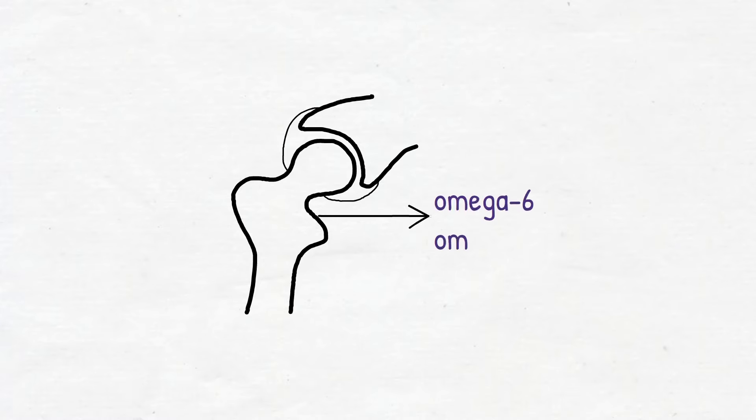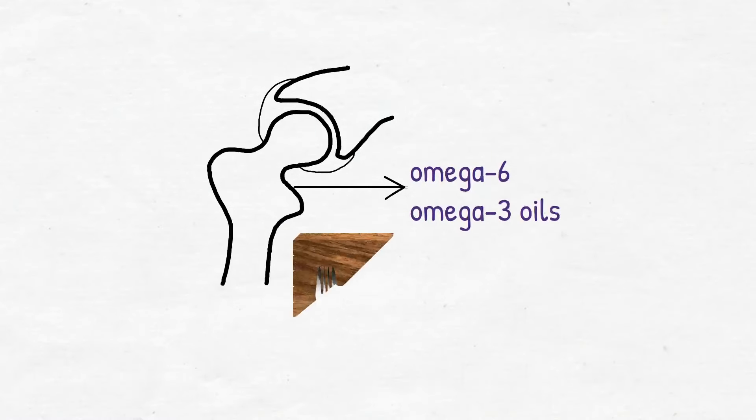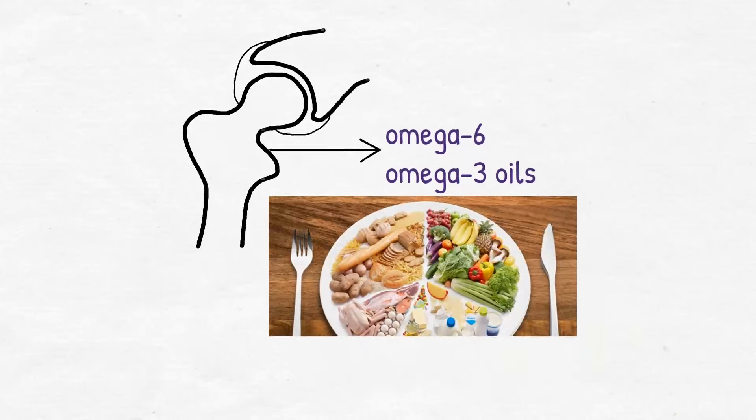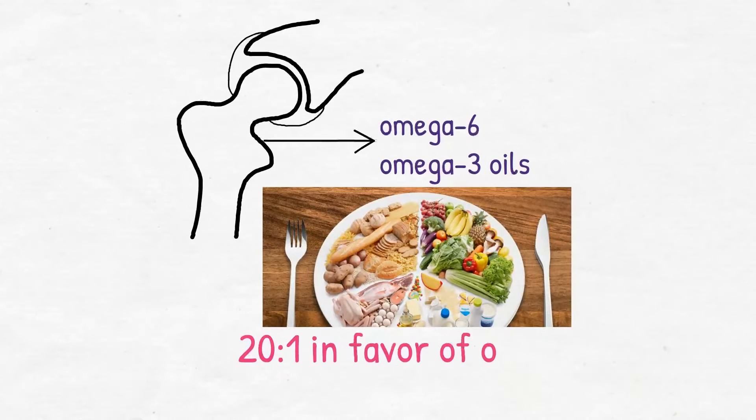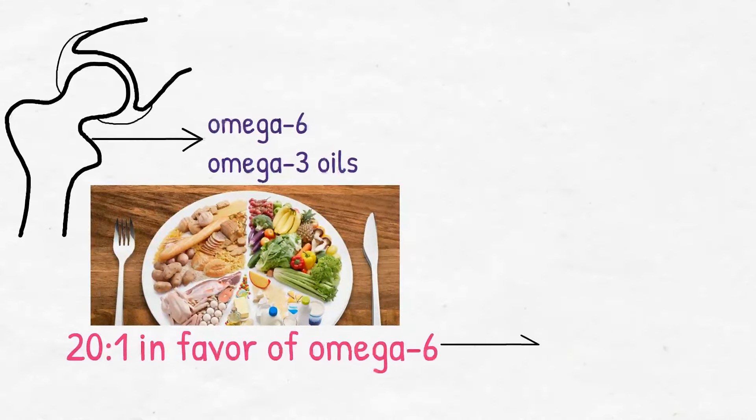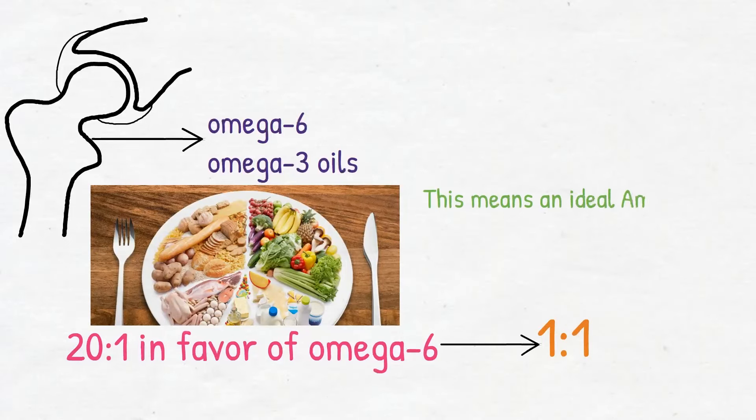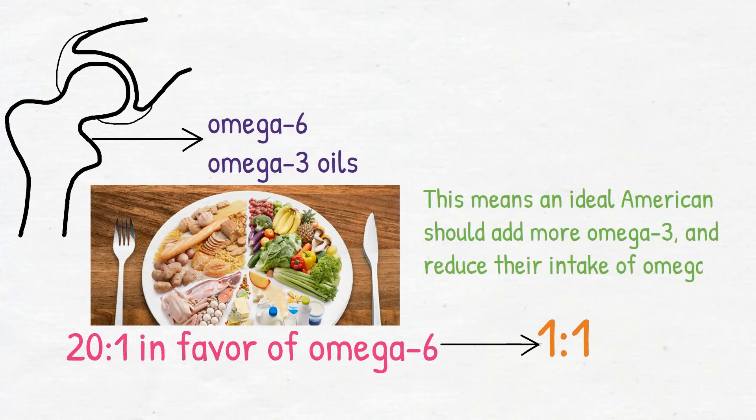Controlling inflammation starts by correcting the imbalance in our diets between omega-6 and omega-3 oils. The ratio in the standard American diet, for example, is about 20 to 1 in favor of omega-6. The ideal balance, however, is 1 to 1. This means an ideal American should add more omega-3 and reduce their intake of omega-6.